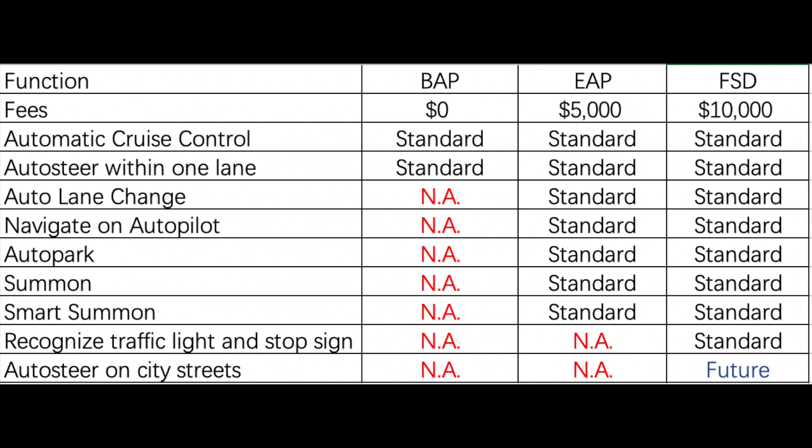The last level is FSD, also known as full self-driving. It's the most expensive at $10,000. It has all the functions included in EAP, and it can also recognize traffic lights and stop signs right now. However, auto steer on city streets — meaning fully automatic city driving — does not come yet if you purchase FSD outside of the United States. You cannot participate in the FSD beta version to test auto steer on city streets.